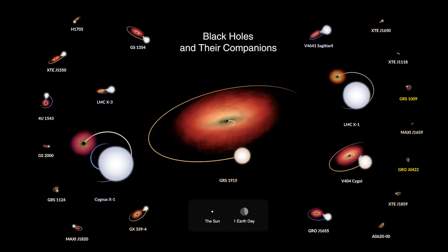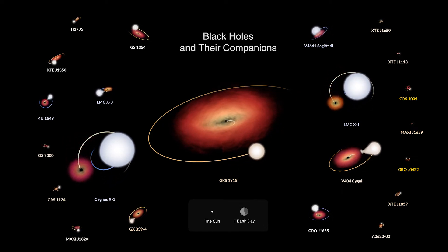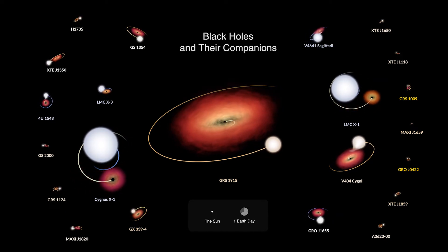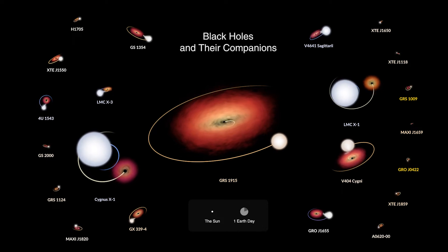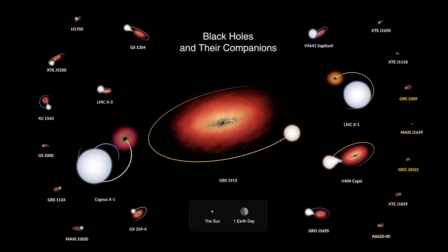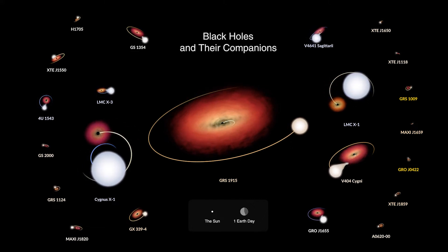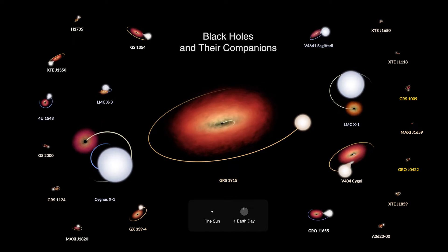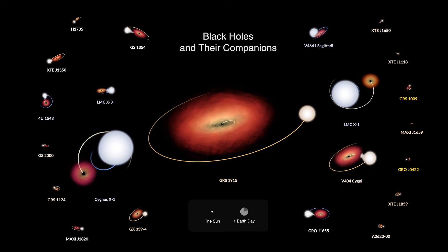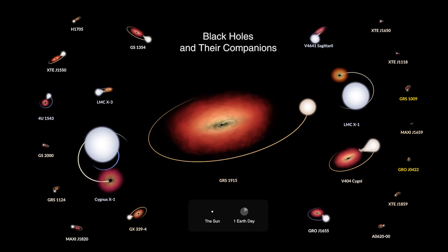When communicating with data, it is often more important to make something understandable than it is to make it photographically real. In reality, all of the black hole event horizon dots at the center of each accretion disk would be smaller than a single image pixel, but for this sequence they are sized proportionally to their mass to make it clear that they are indeed black holes. Their minuscule sizes were also the reason no gravitational lensing is apparent. Orbit lines were added later to illustrate the sometimes surprising gravitational influence each of these massive objects has on its companion.